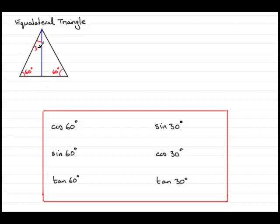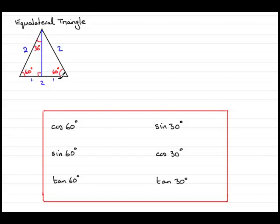We mark that in as 30 degrees, and that means the remaining angle is 90 degrees — a perpendicular line. And because the equilateral triangle is essentially an isosceles triangle, this line is going to cut the base in half. So if this side was two units, all sides are two units, this side would be cut in half: one unit and one unit.